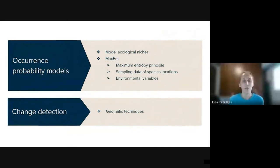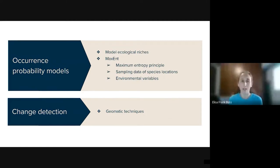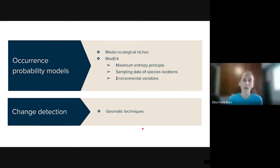To know the distribution of the vector that transmits leishmaniasis, researchers model their ecological niches. A popular software to do this is MaxEnt. MaxEnt works with the maximum entropy principle and produces occurrence probability models. It uses sampling data of species location related to environmental variables such as temperatures or precipitation. In relation to the causes of leishmaniasis, it is important to know where land changes are happening, and it is possible using geomatic techniques.